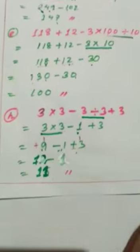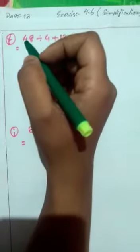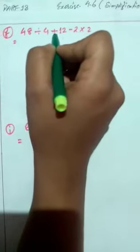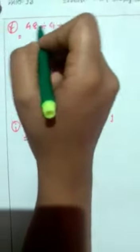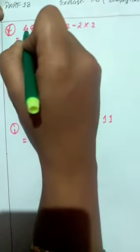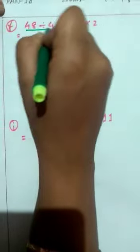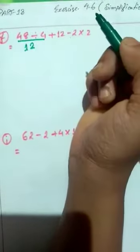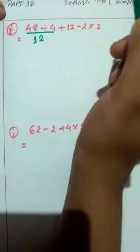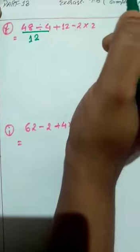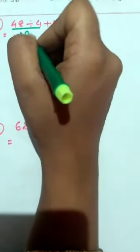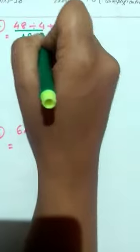You can see here: 48 divided by 4 plus 12 minus 2 into 2. How will we start simplifying? We start with the division work first: 48 divided by 4 gives 12, as you know from the multiplication table — 4 times 12 is 48. So we write 12 here. Then we have plus 12 minus 2 into 2.